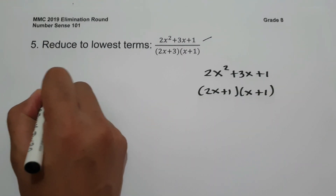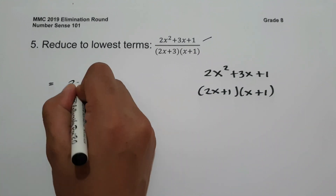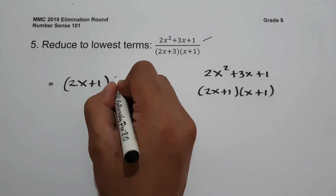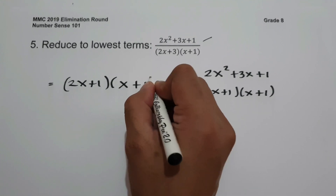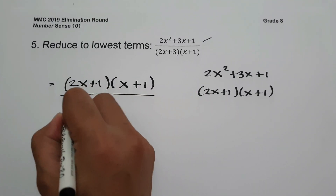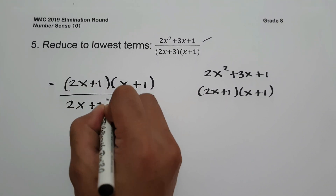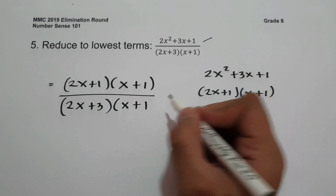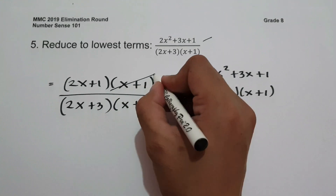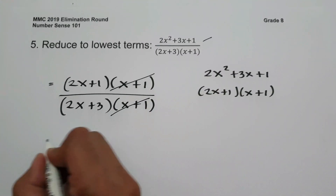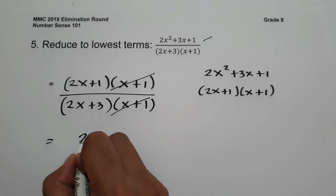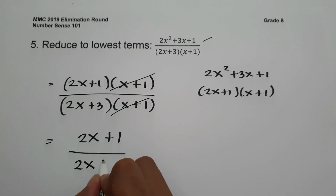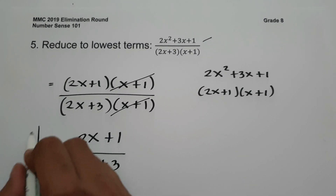So we have (2x + 1)(x + 1) over (2x + 3)(x + 1). We cancel (x + 1), so therefore we have (2x + 1) over (2x + 3), and this will be our answer.